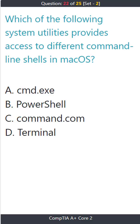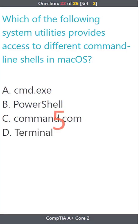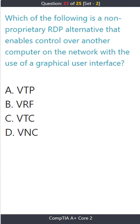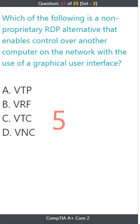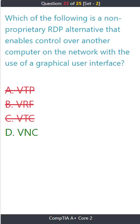Question 22. Which of the following system utilities provides access to different command line shells in Mac OS? A) command.exe, B) PowerShell, C) command.com, D) Terminal. The correct answer is D) Terminal. Question 23: The correct answer is D) VNC.